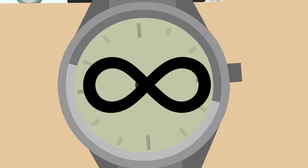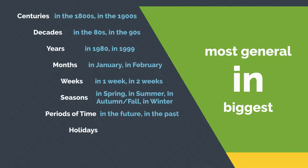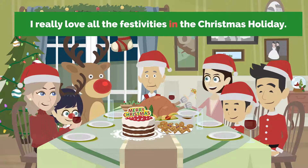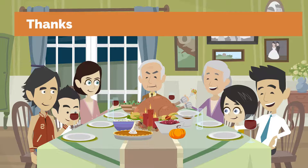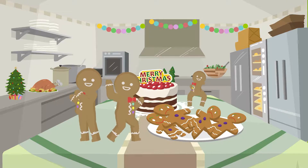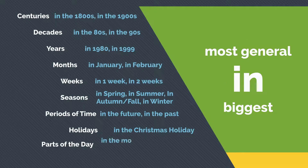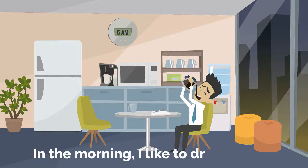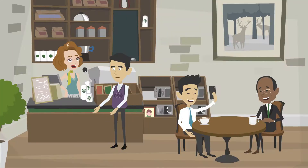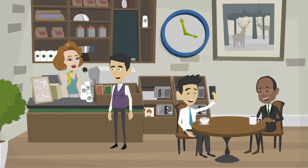In can be used for holidays, such as in the Christmas holiday. For example, I really love all the festivities in the Christmas holiday. In the United States, the Christmas holiday starts right after Thanksgiving, which is the fourth Thursday in November, all the way to December 25th. Therefore, when we talk about holidays, we are talking about a period of time. It can also be used for parts of a day, such as in the morning, in the afternoon, in the evening. For example, in the morning, I like to drink coffee. This is not very specific, as I could be drinking coffee at 5am, 6am, 7am, etc. In addition, it indicates that this is a habit — in other words, I drink coffee every morning.